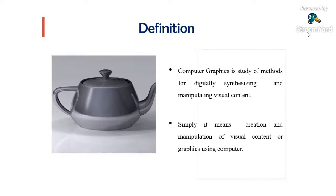What exactly is meant by computer graphics? The definition is: computer graphics is a study of methods for digitally synthesizing and manipulating visual content. Synthesizing means creating, and manipulating means changing. In simple terms: creation and manipulation of visual content or graphics using a computer is called computer graphics.